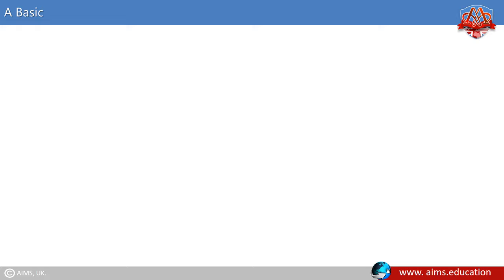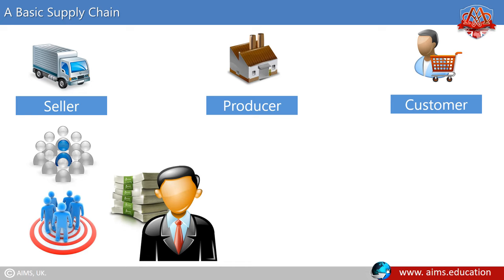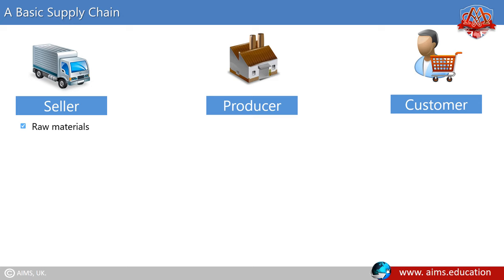A basic supply chain is made up of these entities. A seller is a supplier who provides goods and services, or a person or organisation with whom the buyer does business. Their generic term in the marketplace is seller. A supplier provides materials, energy, services or components for a product or service, such as plastic, fabric, or electric wiring.